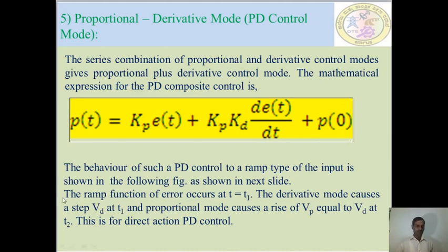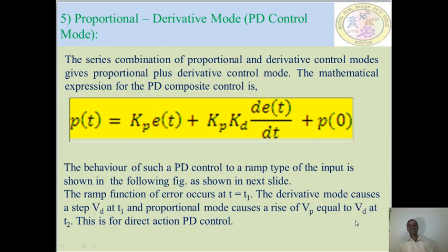The behavior of the PD control for a ramp type input is shown in the following figure. The ramp function error begins at t = t1. The derivative mode causes a step Vd at t1, and the proportional mode causes a rise Vp. Here Vd refers to the derivative component and Vp to the proportional component. This is for the direct action of proportional derivative control.